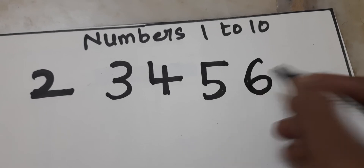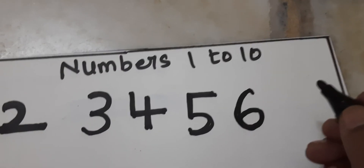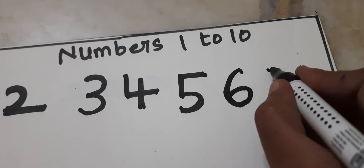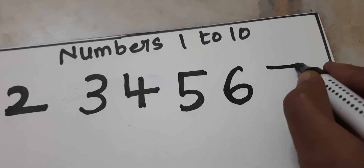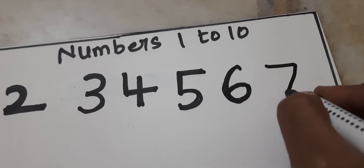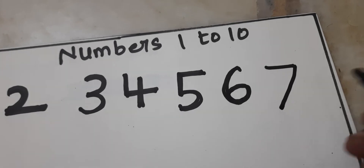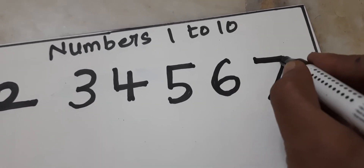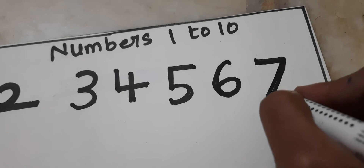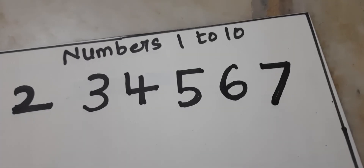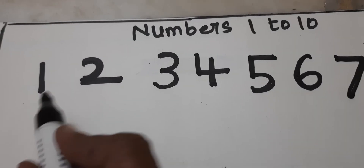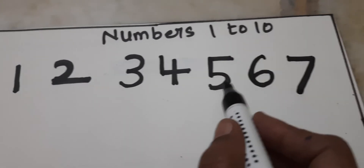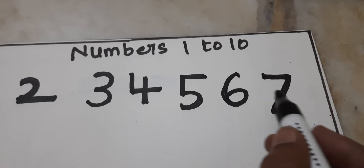How to write 7? Sleeping line, slanting line — number 7. Sleeping line, slanting line — number 7. 1, 2, 3, 4, 5, 6, 7.